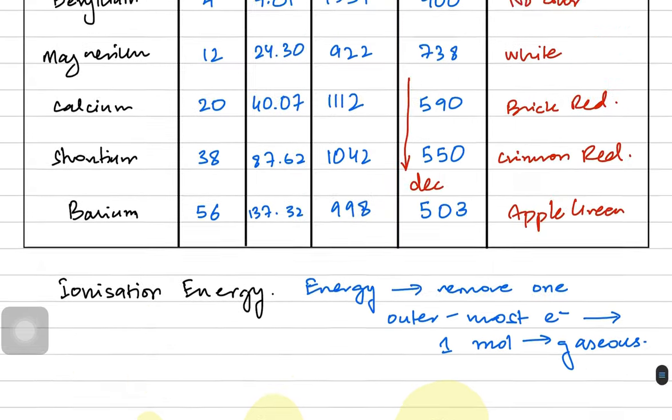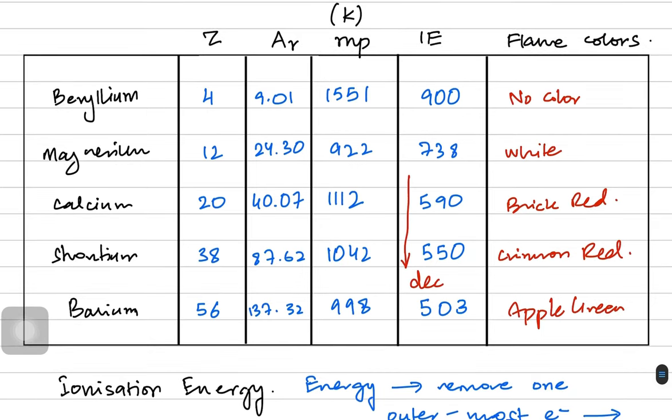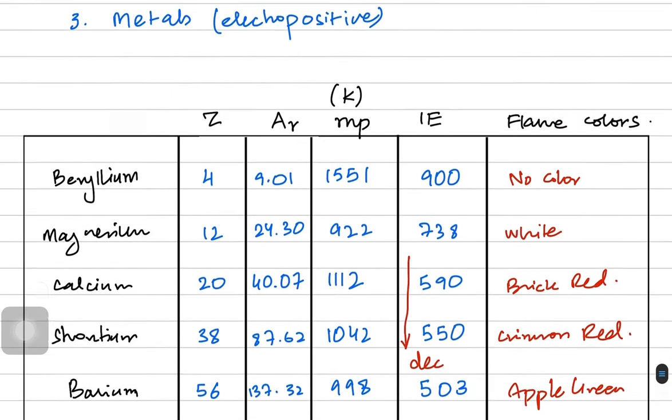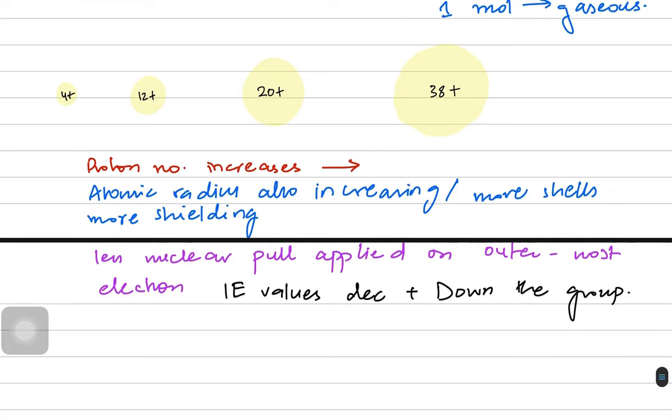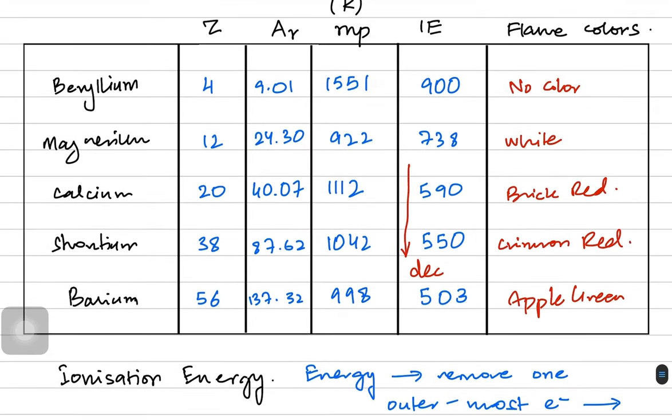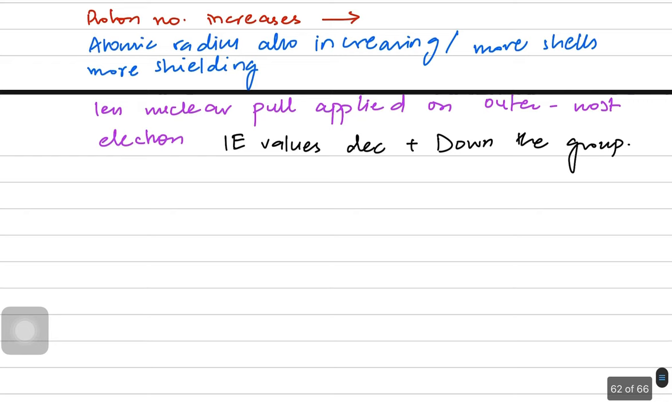For melting point, it's dependent on the density of substances, which is out of scope for AS level. They won't ask you why calcium's melting point is higher than magnesium's, so don't worry about it. For atomic radius, we've discussed how more shells increase shielding, so atomic radius is done.